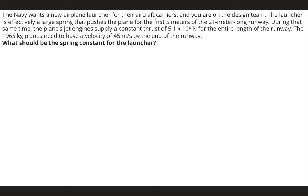The first five meters of this journey is a spring. We're imagining an aircraft carrier problem — there's a huge spring launcher to launch airplanes off the runway. It's essentially a catapult system. We have a 21-meter-long runway, and these planes are a couple thousand kilograms and need a velocity of 45 meters per second by the end of the runway. We want to find the spring constant for this launcher.